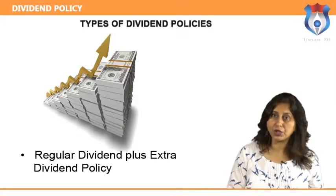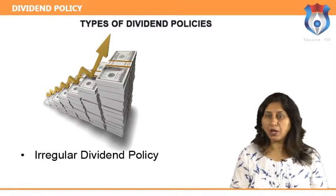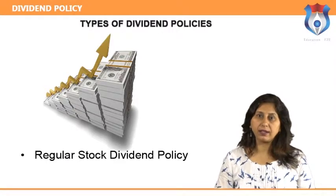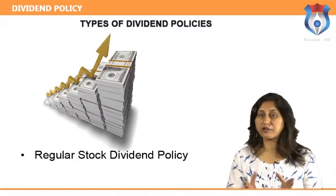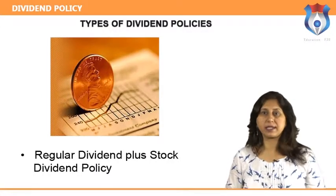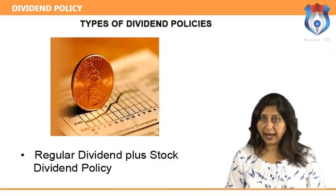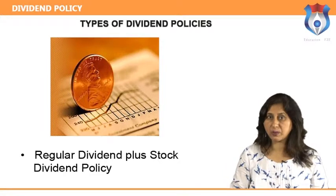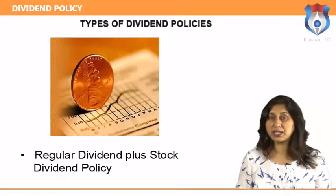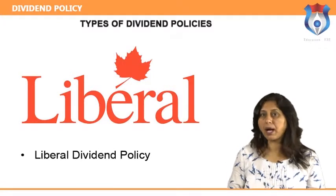Regular dividend plus extra dividend policy: a firm paying regular dividends continues its payout ratio, but when earnings exceed the normal level, directors pay an extra dividend in addition to the regular one. Irregular dividend policy: based on management's belief that dividends should be paid only when the earnings and liquid position of the firm warrant it. Regular stock dividend policy: when a firm pays dividends in the form of shares instead of cash regularly for some years. Regular dividend plus stock dividend policy: justified when a company wants to maintain its regular dividend policy but also retain some divisible profit for expansion, or when it wants to share earnings with shareholders but lacks sufficient liquidity for full cash dividends. Liberal dividend policy: distributing a major part of earnings as dividends while retaining a minimum amount as retained earnings.